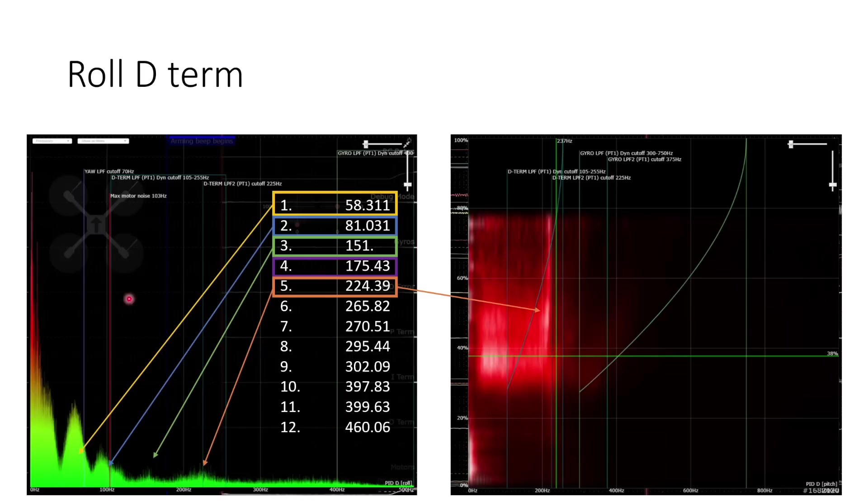And you can see that those first two modes really appear very strongly in the D term noise plot, the 58 Hz mode and the 81 Hz mode. And then we see a little bit of the 150 Hz mode and a little bit of the 225 Hz mode, but they're much, much lower level than the first two modes.